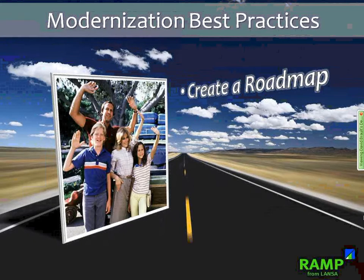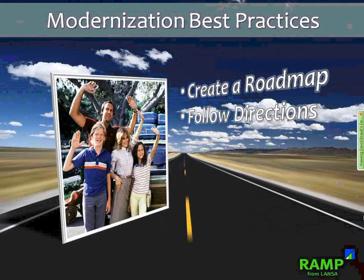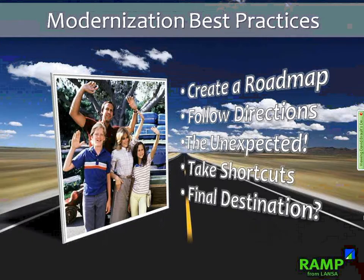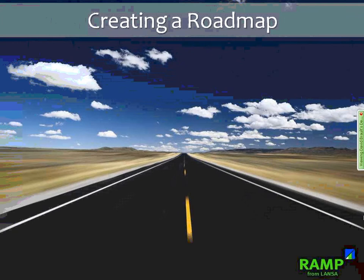The first thing Clark would tell us would be to create a roadmap — for us, that means building the foundation upon which all modernization will be built. Then he'd tell us to follow directions, meaning listening to our end users and getting their feedback early and often. Next, he'd advise us to not only expect the unexpected, but be able to deal with it in a productive manner. He'd recommend taking shortcuts whenever possible — streamlining our programs and making our end users' job faster and more productive. And last but not least, Clark would tell us to make sure we really know what our final destination is before we embark. So let's take a look at the first item: creating a roadmap — having a modernization strategy that will improve our application today without being compromised in the future.